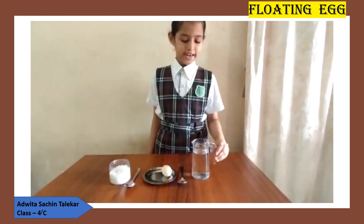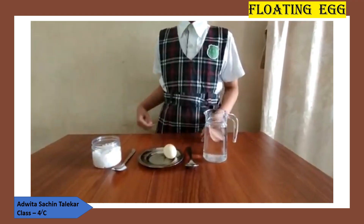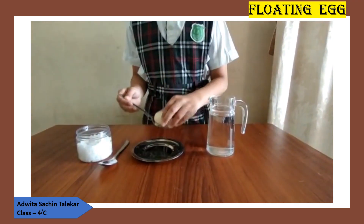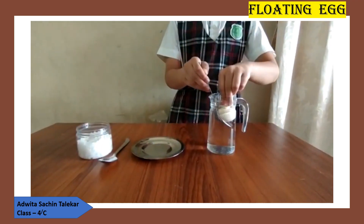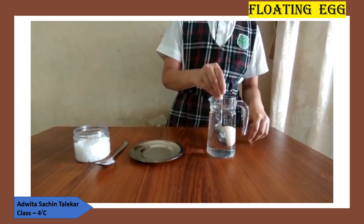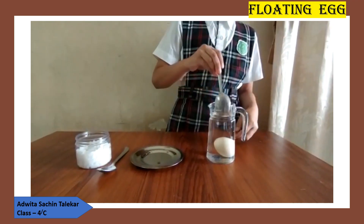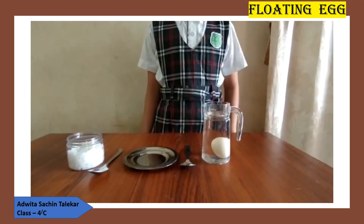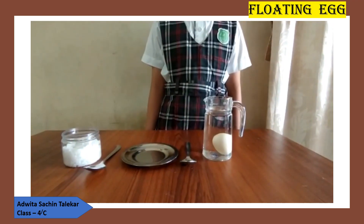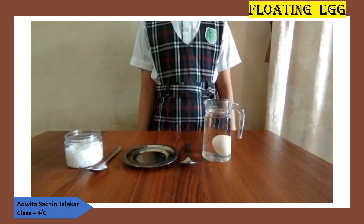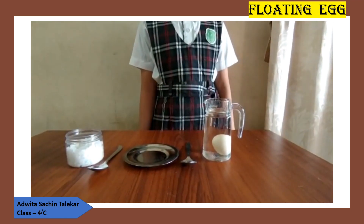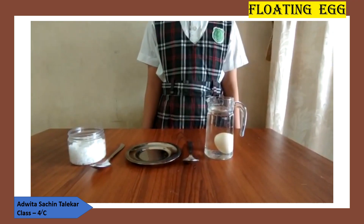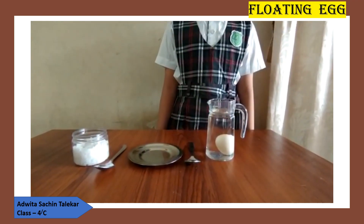First of all, we need a glass of plain water. Then we will place an egg in it. What can you see? The egg sinks in water, because the egg is heavier than the water, or we can say the egg is denser than the water, which causes the egg to sink.